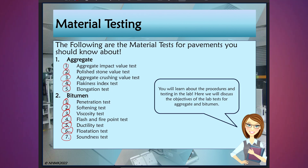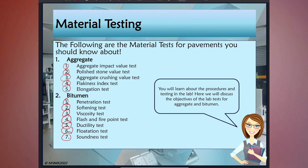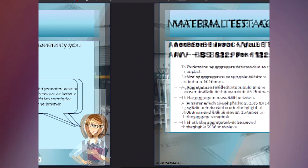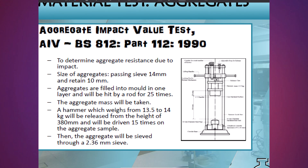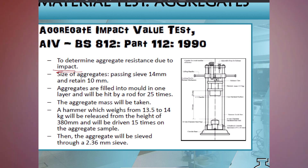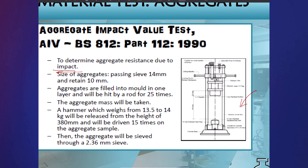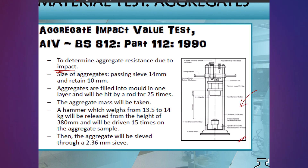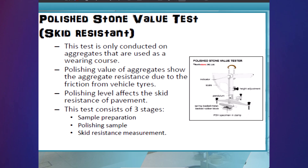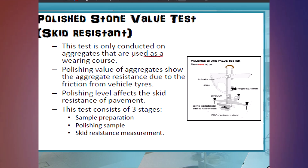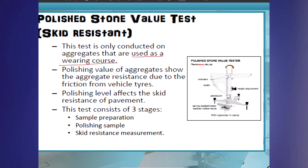You will learn about the procedures and testing in the lab, so here we will just discuss the objectives. The aggregate impact value (AIV) test is conducted to determine aggregate resistance due to impact. Aggregates are filled into the mold, hit by a rod 25 times, and then sieved through a 2.36 mm sieve. Next, the polished stone value test, also known as the skid resistance test, is only conducted on aggregates already being used as a wearing course. The polishing value shows the resistance from vehicle tyres.